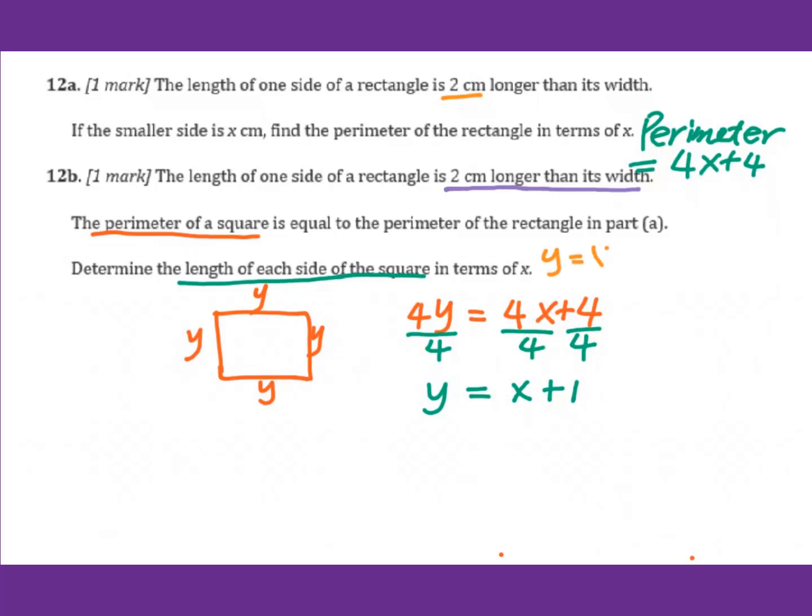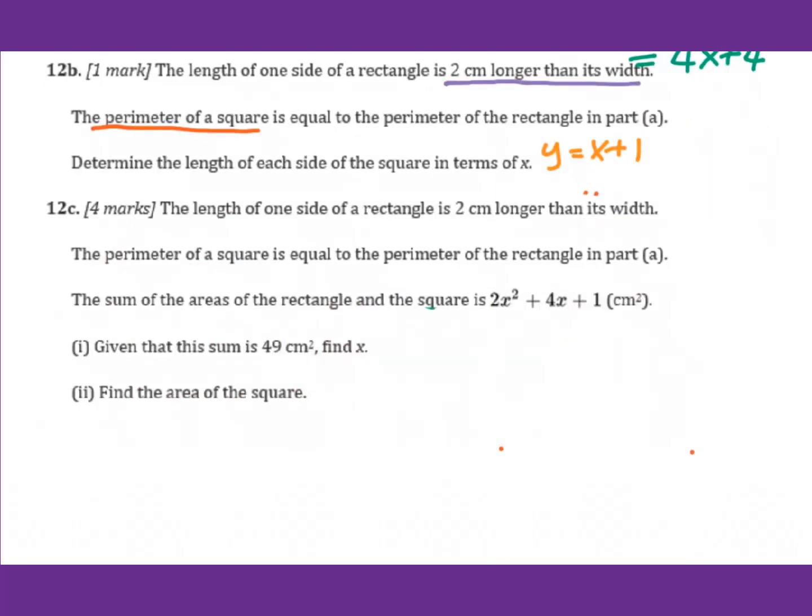So we have y equals x plus 1. Let's go to 12c. The sum of the area of the rectangle and the square is this. Given that this sum is 49, find x. So we have 2x squared plus 4x plus 1 equals 49. You can go to equation solver or by graph to figure it out. Before you go to equation solver or by graph, move everything to the left side, get equal to 0. So you have 2x squared plus 4x, 1 minus 49 will be negative 48 equals to 0.